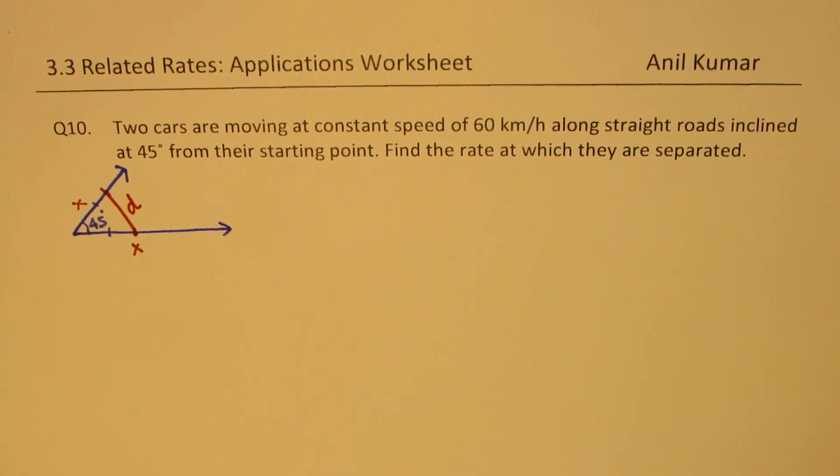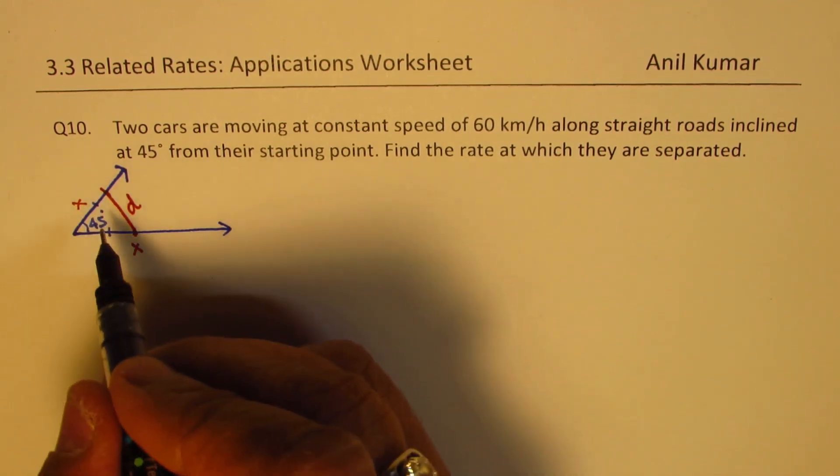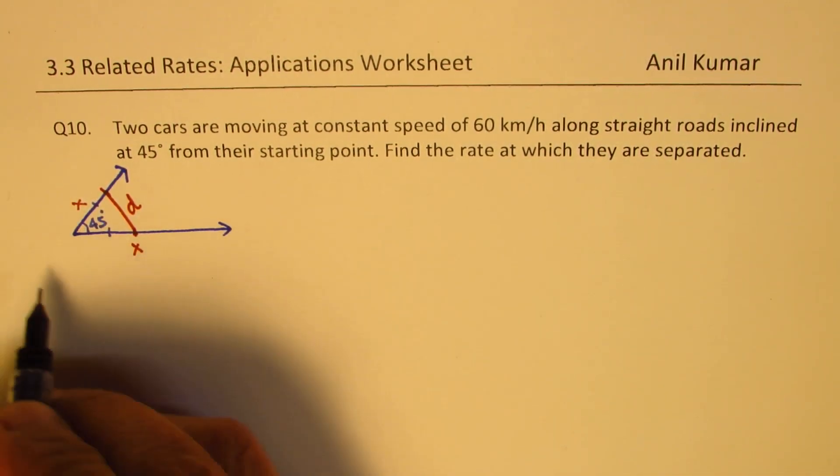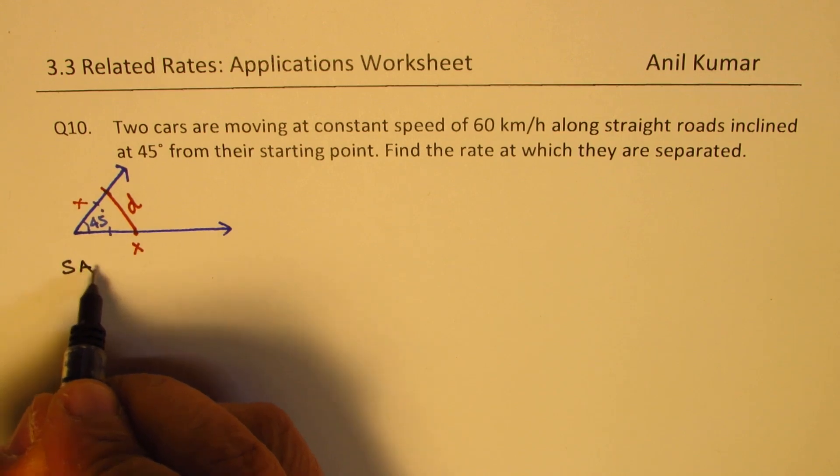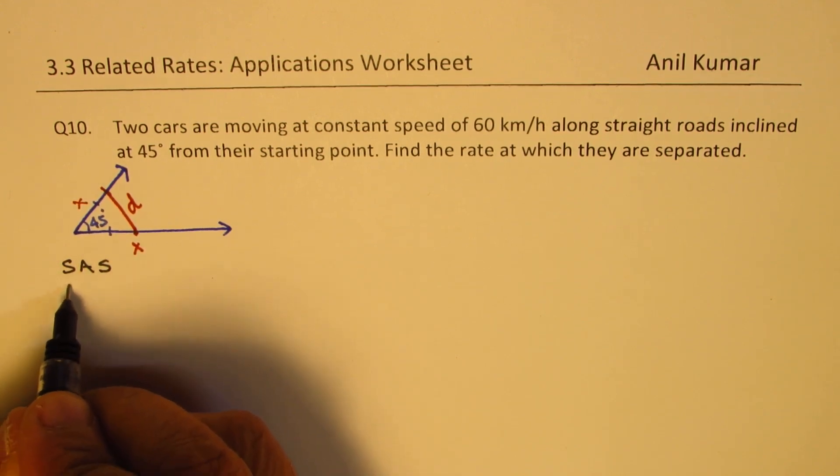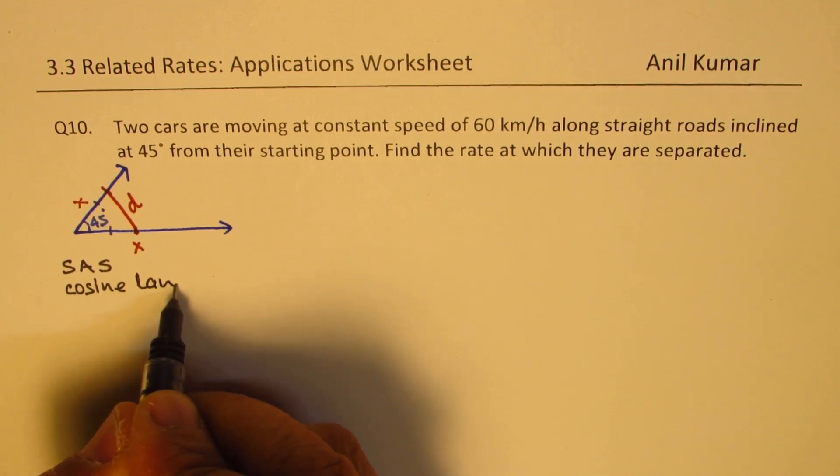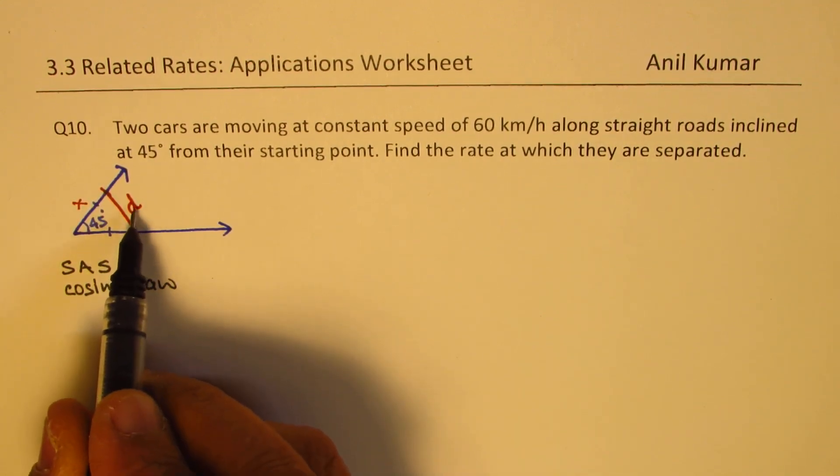You can actually now use a bit of trigonometry and then solve this question. Now a good reminder here is that in trigonometry when you are trying to solve a triangle where two sides and an angle is given, the situation is SAS. In that case you use cosine law. So we are going to use the cosine law to find D.